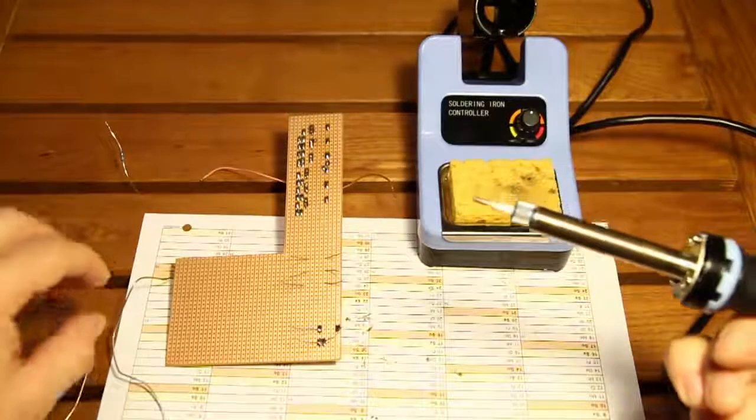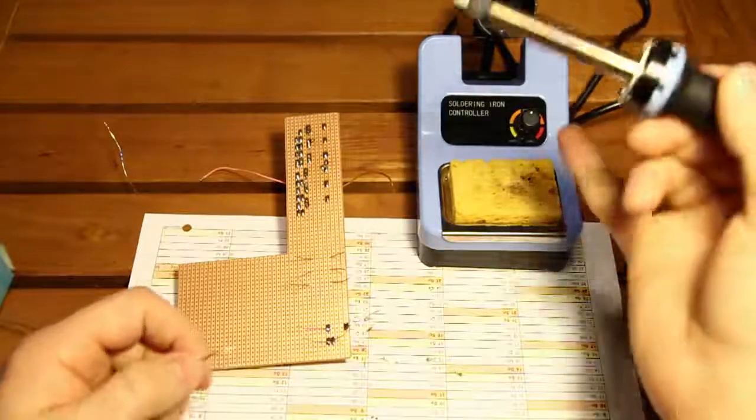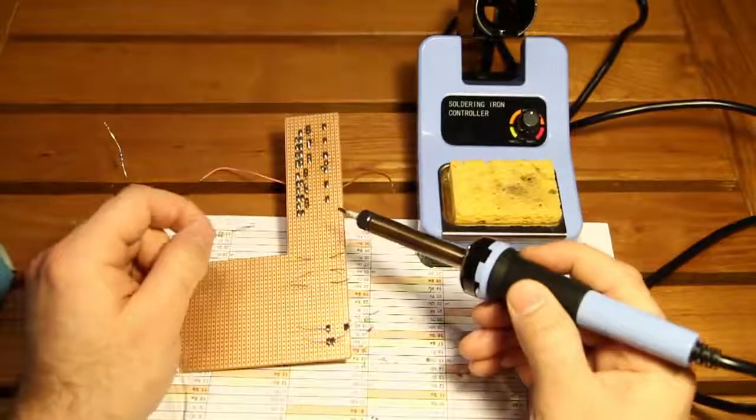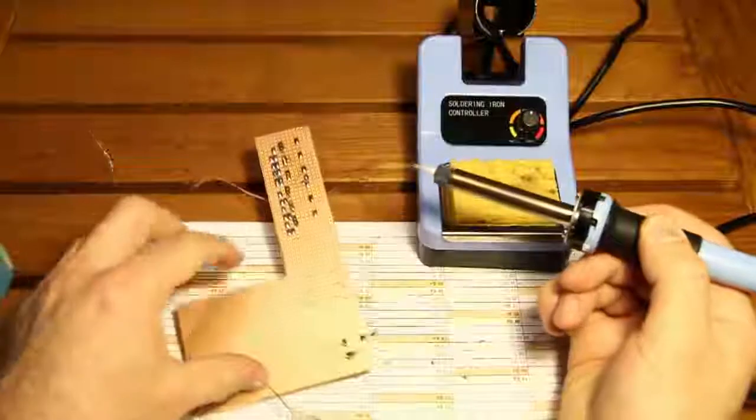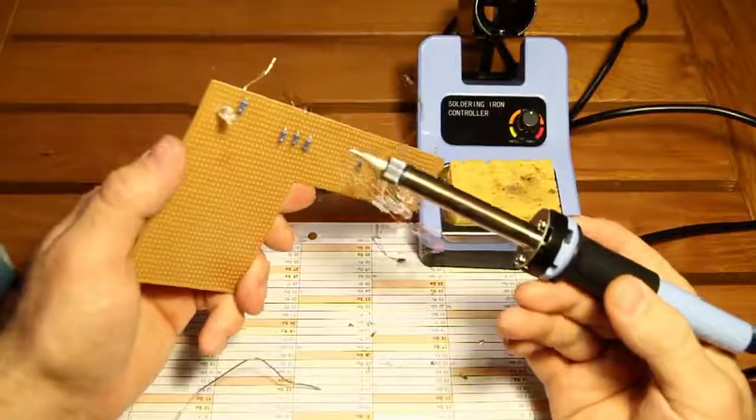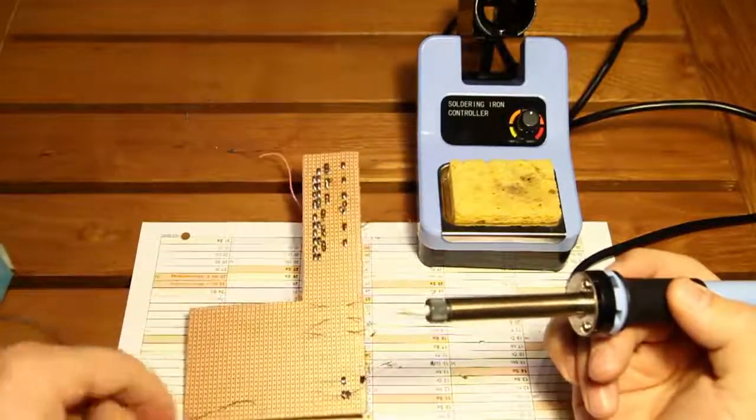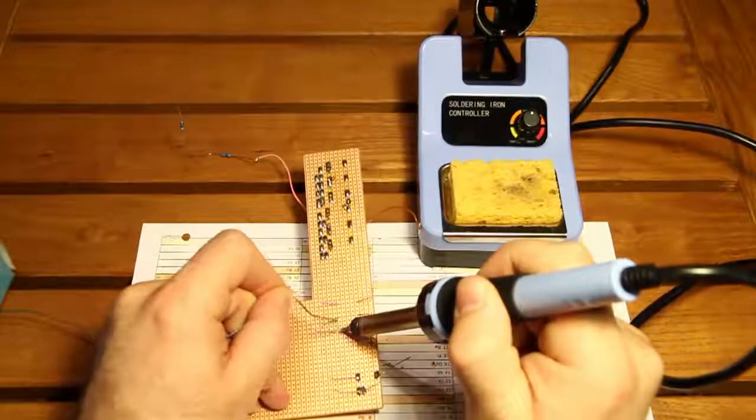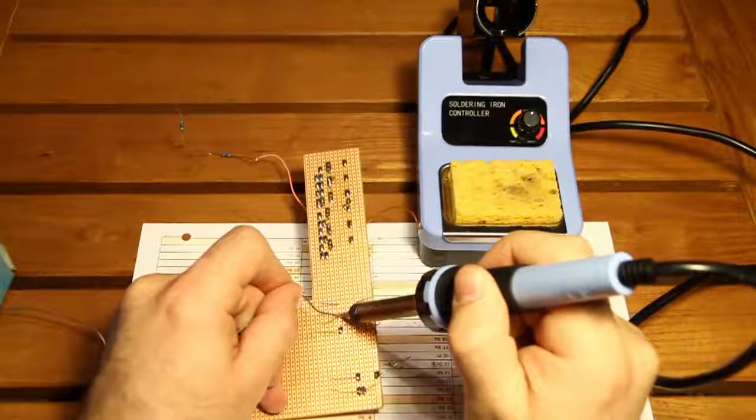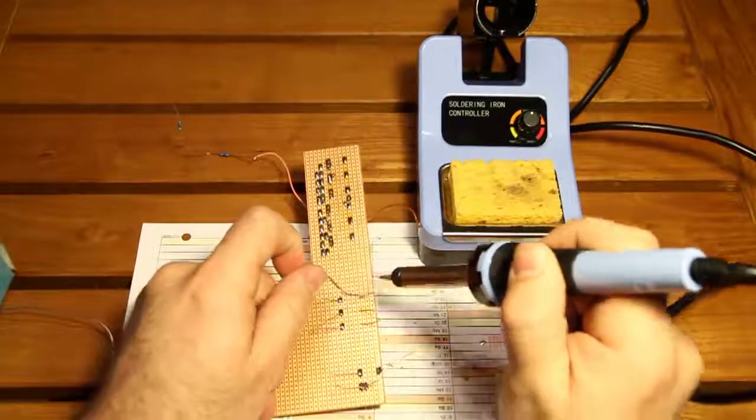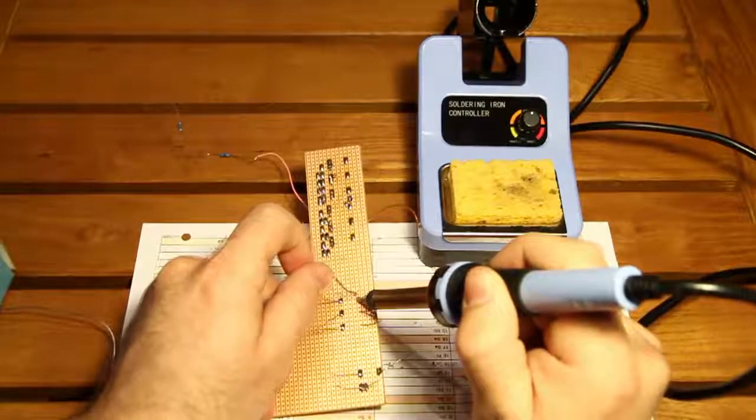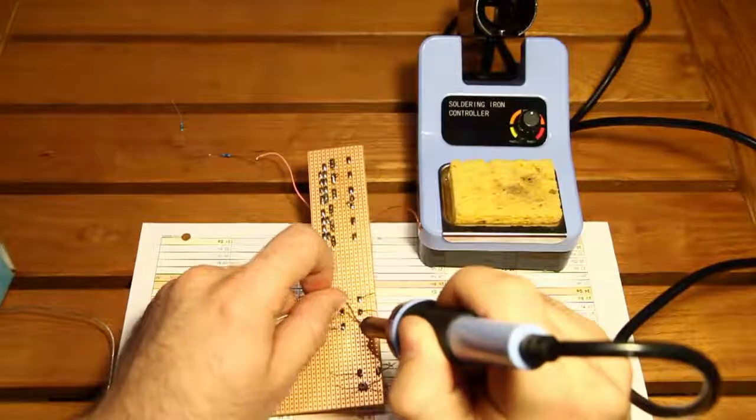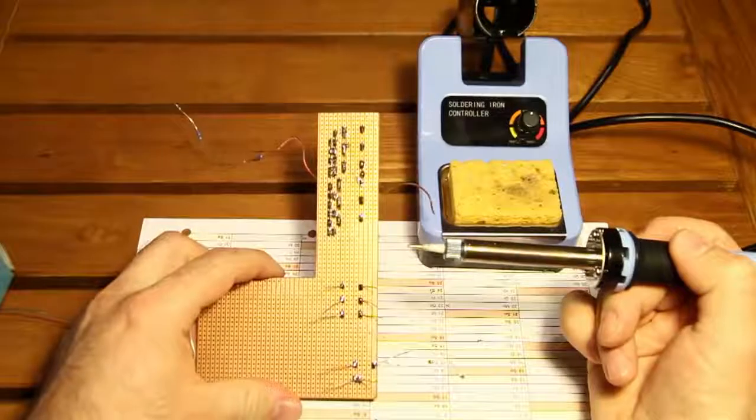So now let's test out the soldering iron. I have let it heat up at 300 degrees, and let's see if it solders correctly. I have this small board with just a few resistors on there, and I am going to solder them up and see if it actually works. Let's start at the bottom. Yeah, no problem there. So yeah, it does the job.